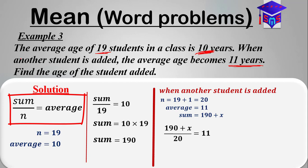So we solve for x by multiplying both sides by 20, so that this 20 will cancel this 20 over here. So now we have 190 plus x is equal to 11 times 20, which should be giving us 220. So when you solve this, we're going to get x to be equal to 30.